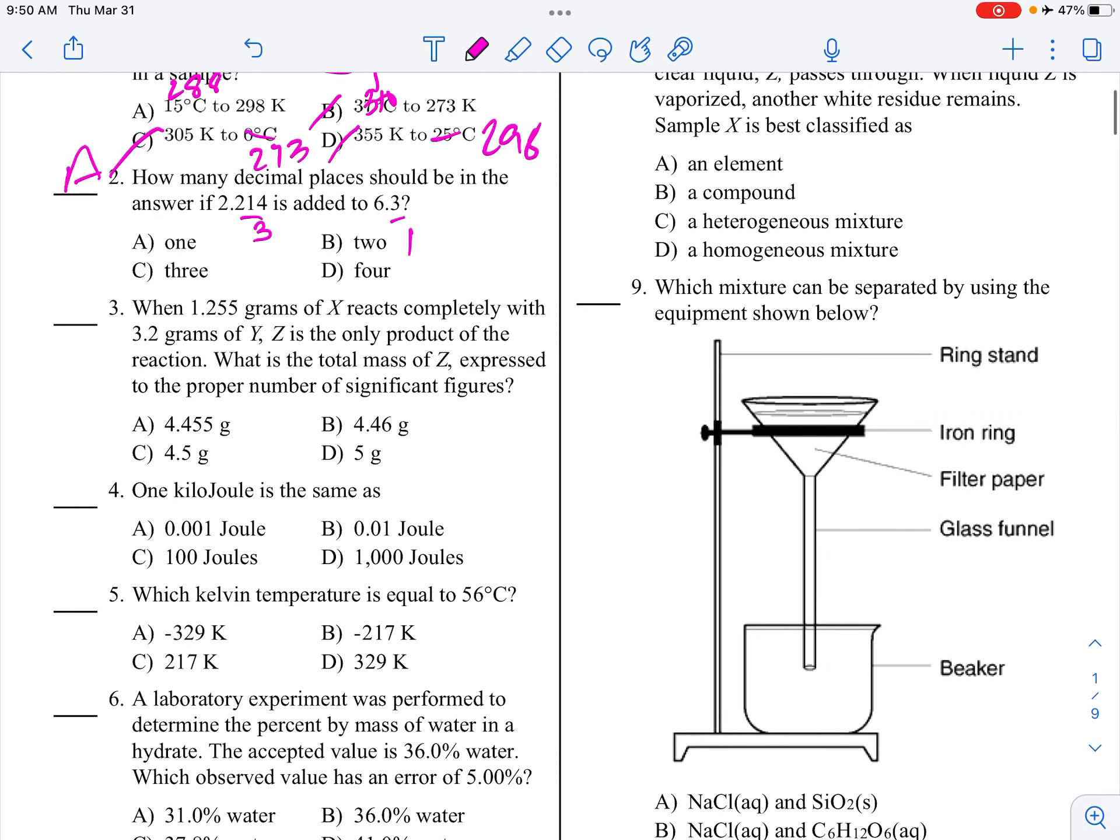When 1.255 grams of X reacts completely with 3.2 grams of Y, Z is the only product. What is the total mass? Okay, so total means adding. So 1.255 plus 3.2 gives me 4.455 according to my calculator. But when we go to the sig figs, you want one decimal place. So here's my one decimal place. This rounds it up to 4.5. So choice is C.